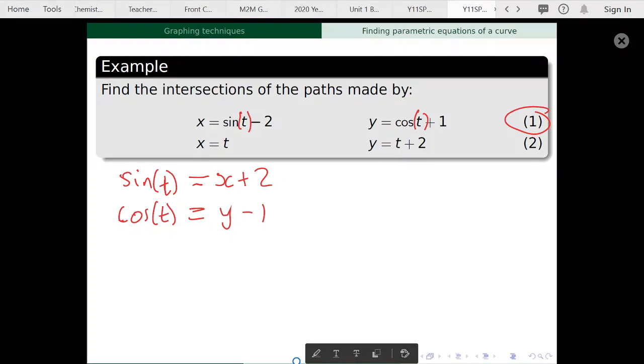is equal to y minus 1. And so now I can use my Pythagorean identity here, that sine squared of something, so sine squared of t plus cos squared of that same something, in this case t, is equal to 1.